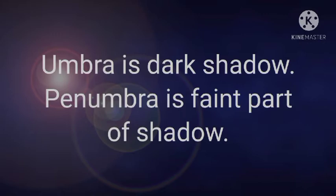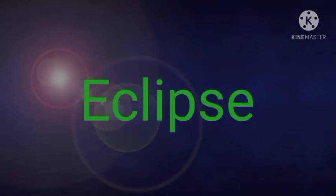The umbra is the dark shadow and the penumbra is the faint part of the shadow. If we use an extended source, we get two types of shadows: the middle dark shadow, which is the umbra, and the outer faint part, which we call the penumbra. Next, let's learn about eclipses — we also learn about eclipses in geography.